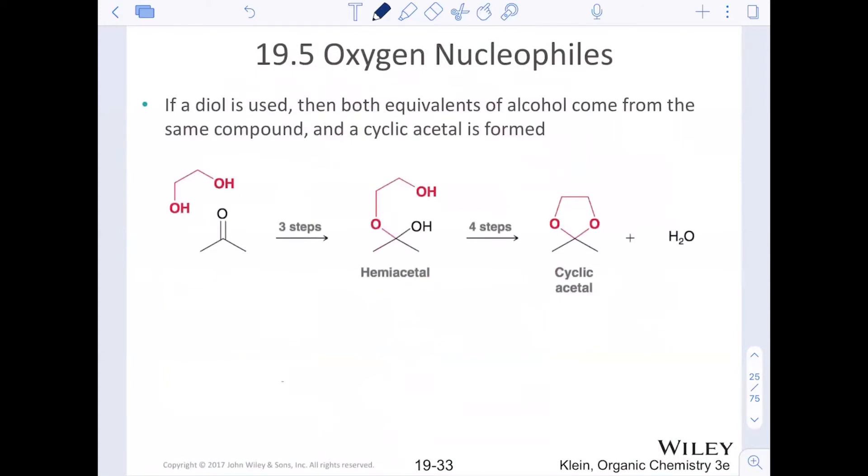If a diol is used, then we will actually use both equivalents of that alcohol from the same compound. So a cyclic acetal is formed, and the cyclic acetal is formed because an intramolecular reaction is more favored than an intermolecular. So when we're looking at that hemiacetal, the second oxygen on the diol is most likely going to react to kick out that OH group, because intramolecular reactions are more favored. They're right there. Proximity says, yeah, we're going to do that one instead.